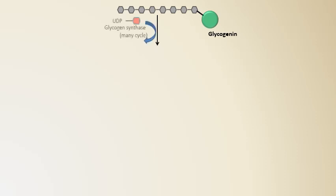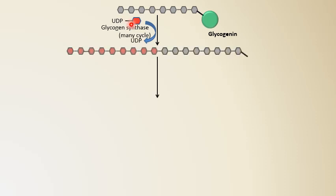So that is glycogenin, the enzyme glycogen synthase, and UDP-glucose. There is synthesis of a chain long enough with around 10 to 12 glucose residues, all attached to each other with alpha-1,4 linkages.